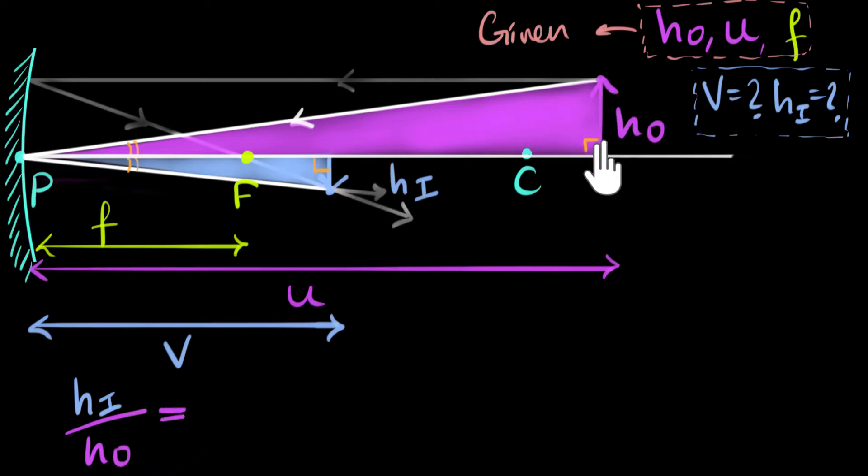The ratio of these two sides have to be equal to ratio of any other two sides. That has to be equal to ratio of this side and this side. This side is V. So it has to be equal to ratio of V divided by this side, U.